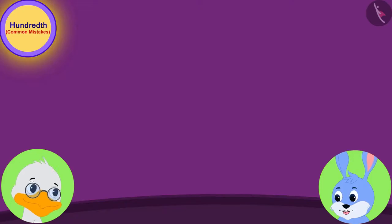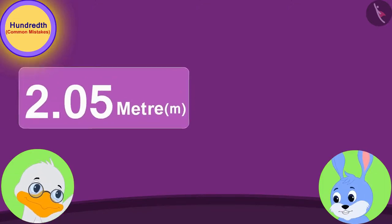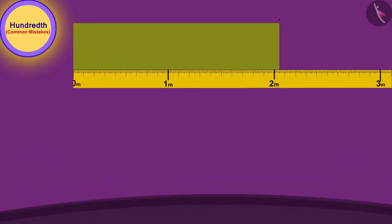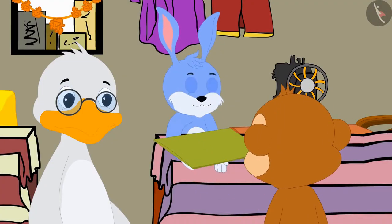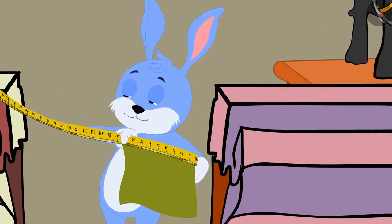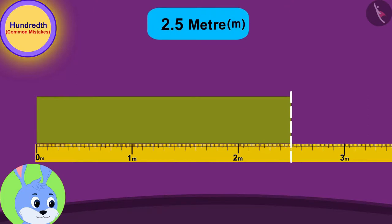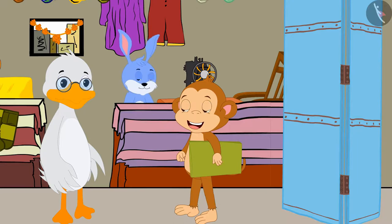Uncle explained this to Bunny. 'Well, now I understand, Uncle, that 2.05 meters and 2.5 meters are not equal. And I accidentally gave Babban cloth of the wrong length,' Bunny told Uncle. Bunny immediately took back the cloth from Babban, and this time measured 2.5 meters, or 2 meters and 50 centimeters of cloth using his tape, cut it, and gave it to Babban.